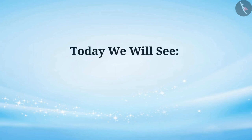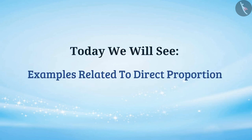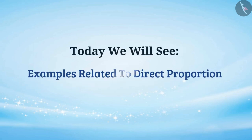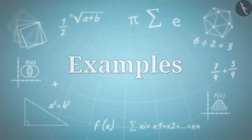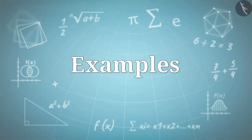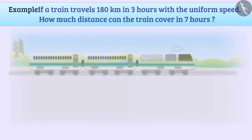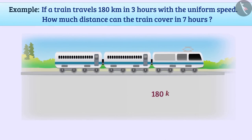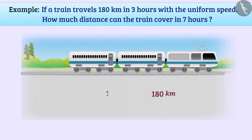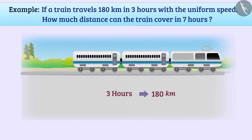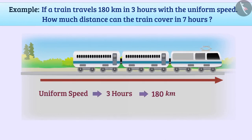Today we will see examples related to direct proportion. If a train travels 180 kilometers in 3 hours with uniform speed, how much distance can the train cover in 7 hours?